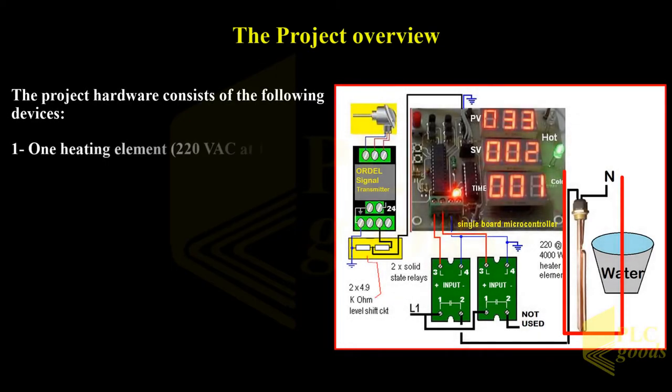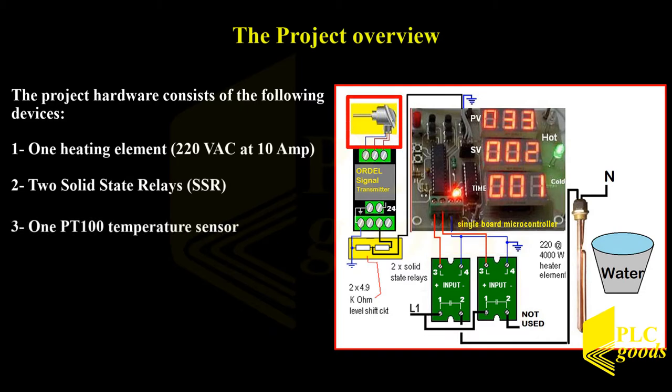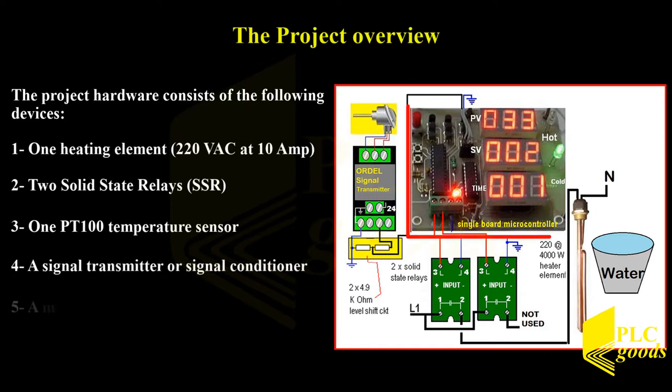The project hardware consists of the following devices: one heating element 220 volt AC at 10 amps, two solid-state relays SSR, one PT-100 temperature sensor, a signal transmitter or signal conditioner, a microcontroller, and LED display PCB.